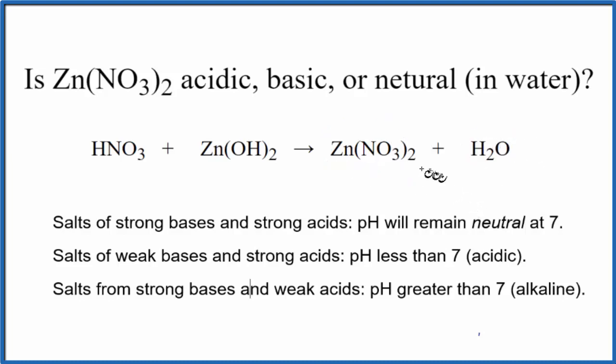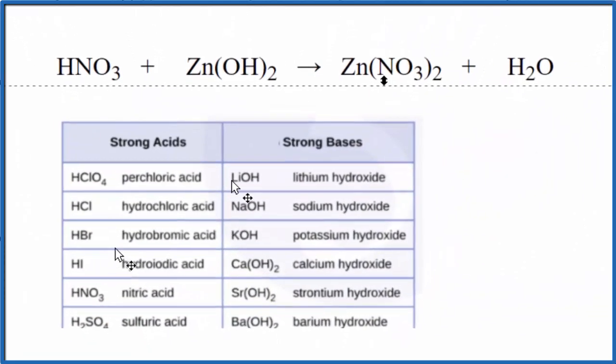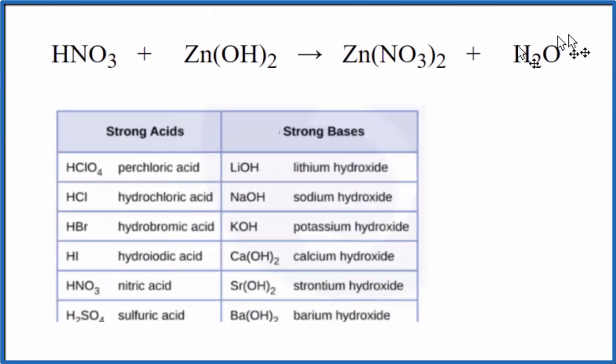Now that we know the equation, we need to figure out the strength of the acid and the base so we can use these rules here. This is a really good table to memorize for strong acids and strong bases. As we look down the table, here's nitric acid, HNO3, strong acid.